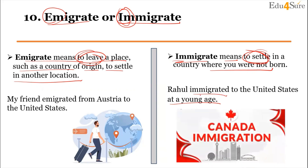Consider 'Canada immigration' — what do you think? We are leaving from here to settle in Canada, and we were born in India, so we are emigrating. Now, how do you remember the difference? Emigrate starts with E, so you can associate it with 'exit' — we are leaving that place to settle in any other country.